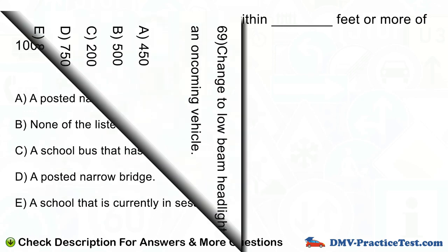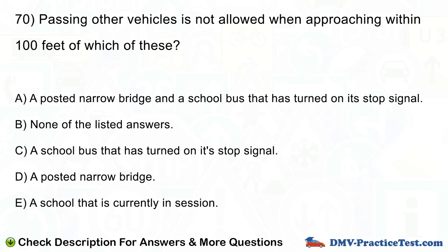Question number 70. Passing other vehicles is not allowed when approaching within 100 feet of which of these? A. A posted narrow bridge and a school bus that has turned on its stop signal. B. None of the listed answers. C. A school bus that has turned on its stop signal. D. A posted narrow bridge. E. A school that is currently in session.